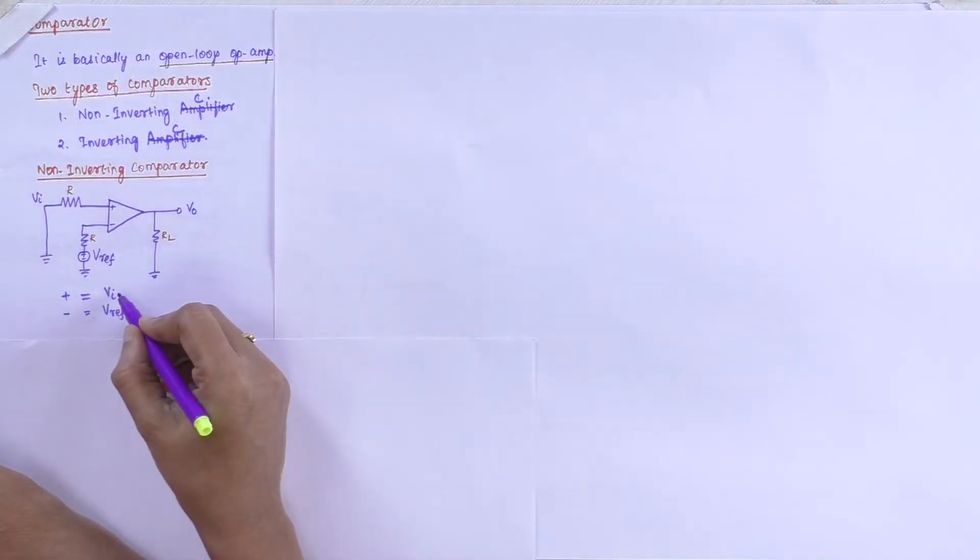The three conditions are: A equal to B, A greater than B, and A less than B. With these two variables, we derive those three conditions. Here we compare VI and V reference: VI equal to V reference, VI greater than V reference, or VI less than V reference. We are going to draw the ideal transfer characteristics of this comparator circuit.